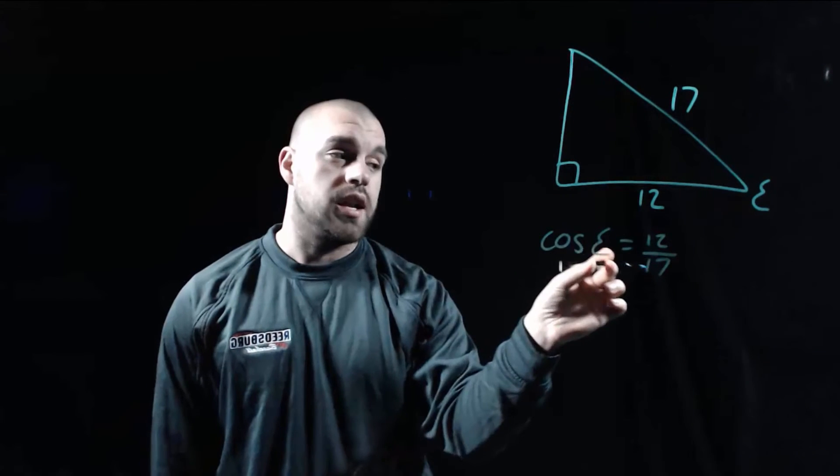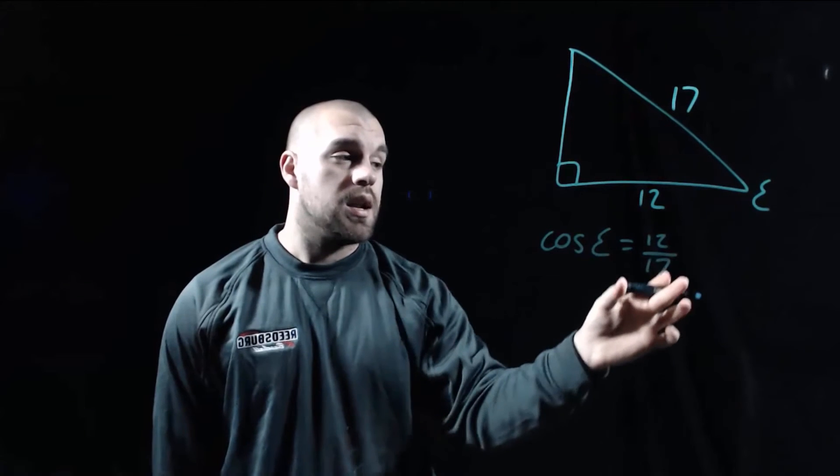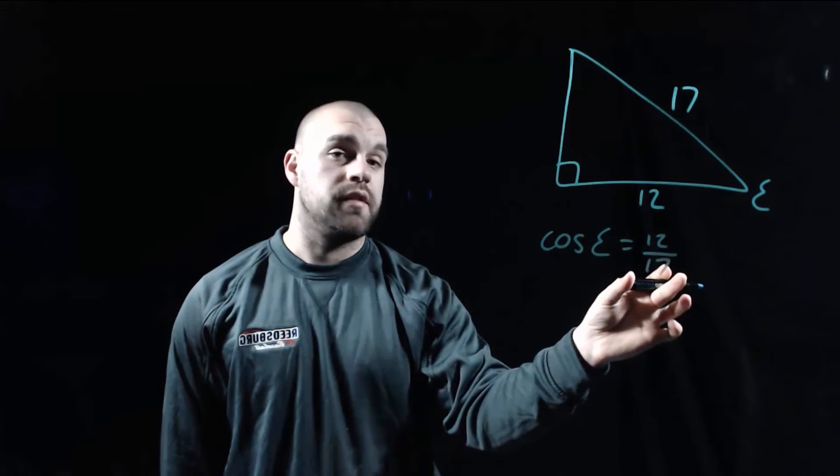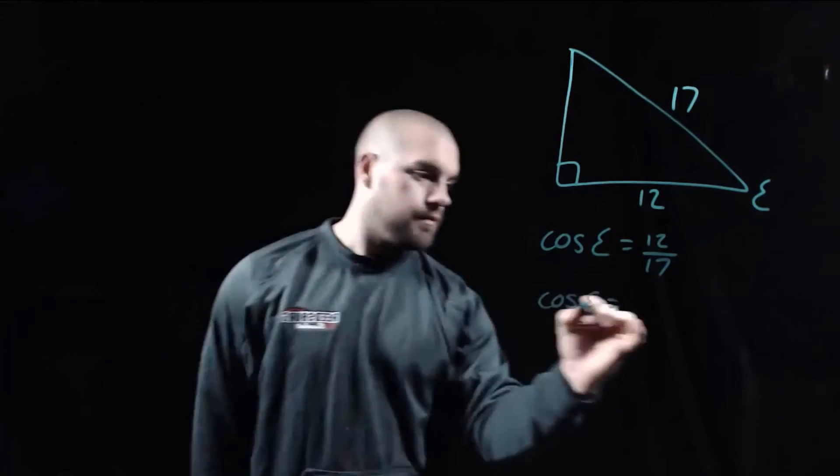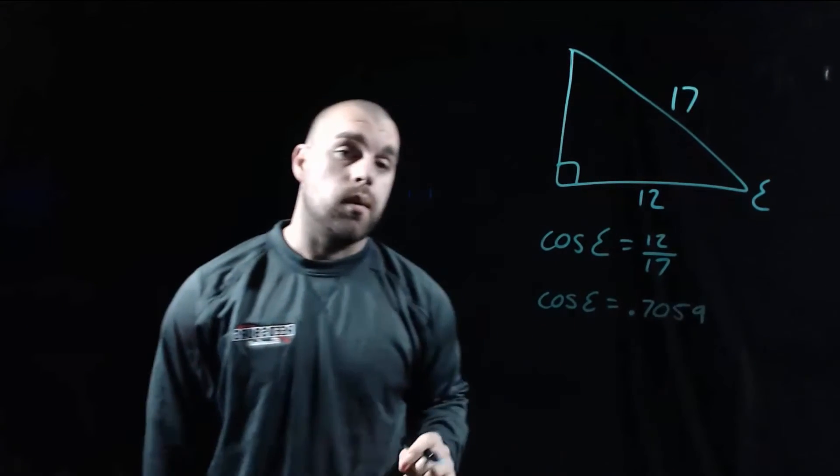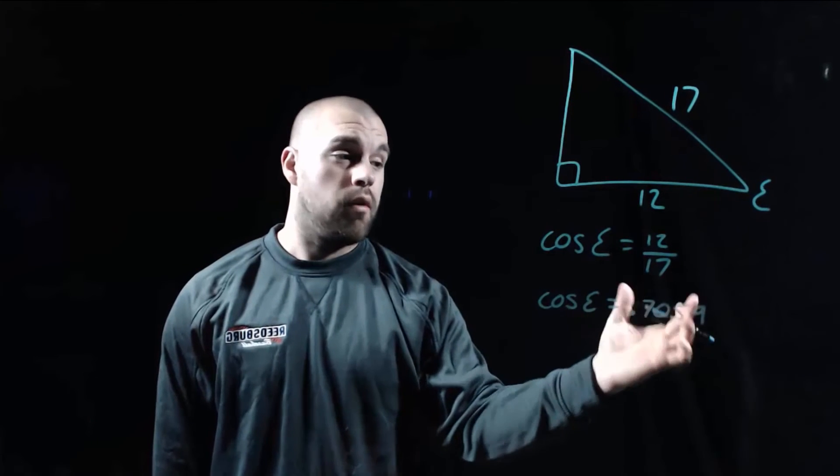So we get the cosine of E equals 12 over 17. Now, what I want to do is take that 12 divided by 17 and type that into my calculator. And when we do that, we get about 0.7059.